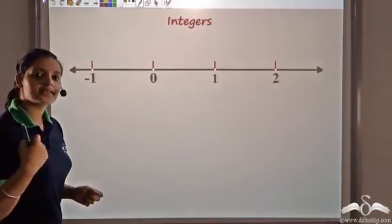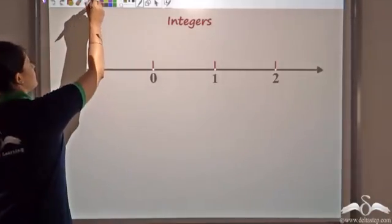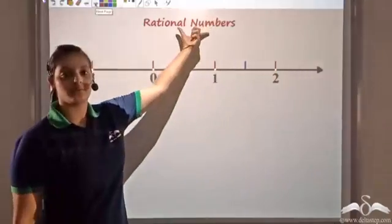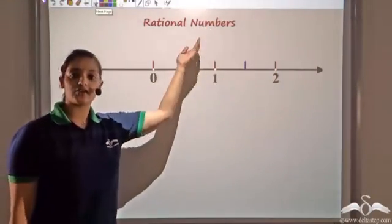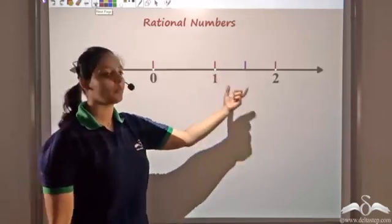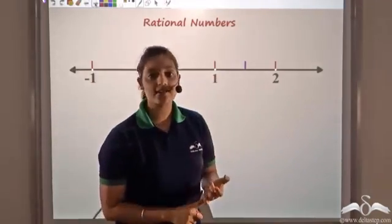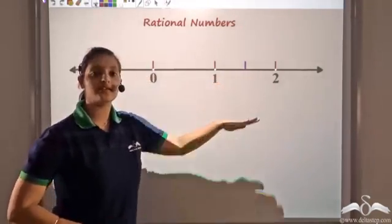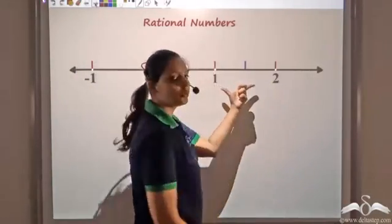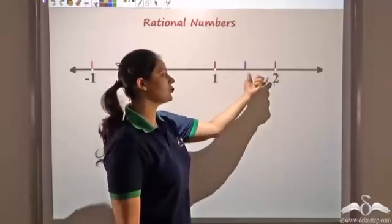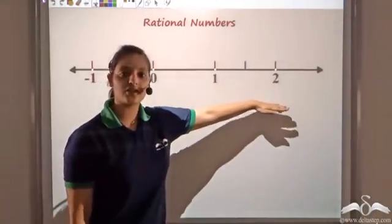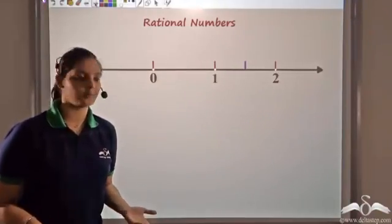But what if I ask this same question when the number line represents rational numbers? So if I have a number line representing rational numbers and I ask whether there is any number between 1 and 2, then yes, you have rational numbers. We have seen that fractions are numbers which can be between two numbers, and these fractions are nothing but rational numbers.